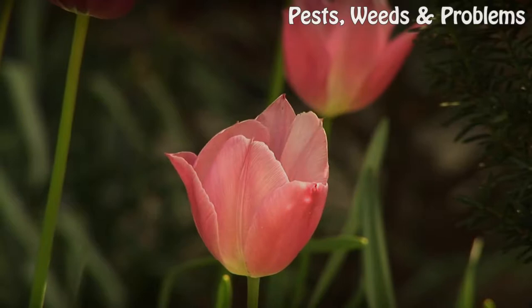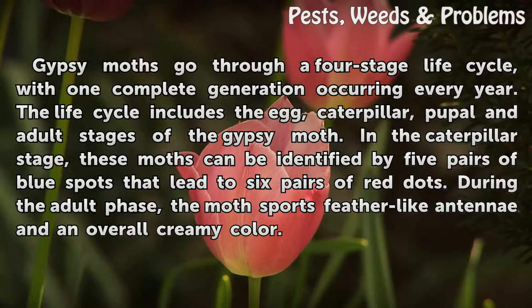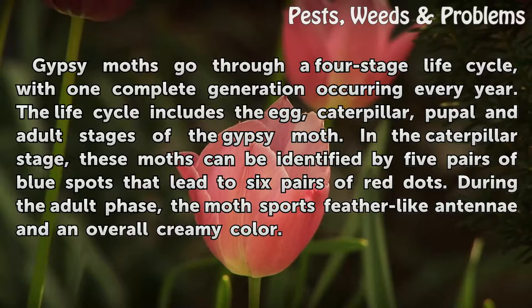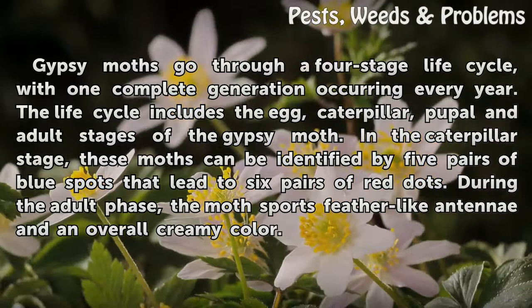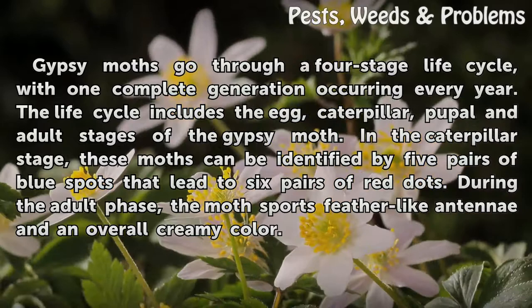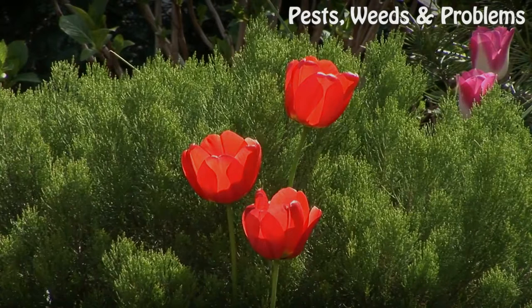Gypsy moths go through a four-stage life cycle, with one complete generation occurring every year. The life cycle includes the egg, caterpillar, pupal, and adult stages. In the caterpillar stage, these moths can be identified by five pairs of blue spots followed by six pairs of red dots. During the adult phase, the moth sports feather-like antennae and an overall creamy color.